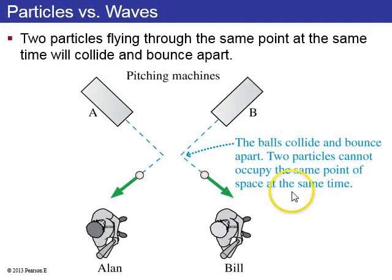We'll start by considering two particles, like baseballs, flying through space. Here is baseball A, which is launched down to the right, and baseball B is launched down to the left. When the balls get to the same position at the same time, they can't coexist, and so they bounce off one another.